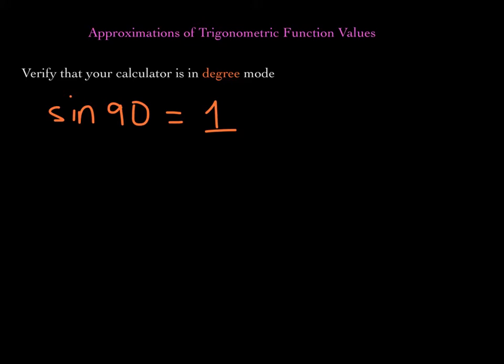To get us started, let's make sure this is really important: when we are evaluating trig functions of angles given in degrees, the calculator must be in degree mode. You can do this easy check to verify that your calculator is in the right mode. In your calculator, go ahead and enter sine of 90 and then press equals. If the calculator gives you 1, then your calculator is in degree mode — it will interpret this as 90 degrees.